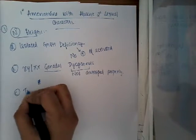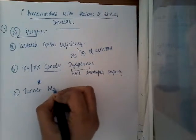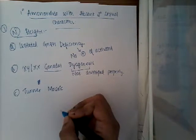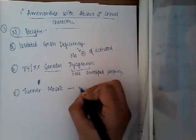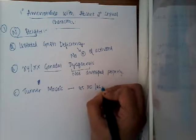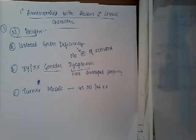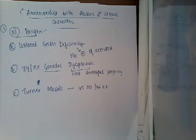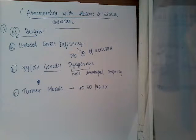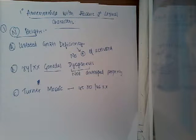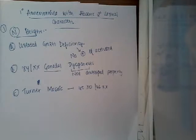The third one is Turner's mosaic, which is similar to Turner's syndrome. In Turner's mosaic, there is 45XO or 46XX — that is, some cells have 45XO and some other cells have 46XX. In such a state, we call it Turner's mosaic. The ovaries will have few follicles, and as a result, ovulation and estrogen production will be very, very less. The severity of the syndrome is less compared to Turner's syndrome.